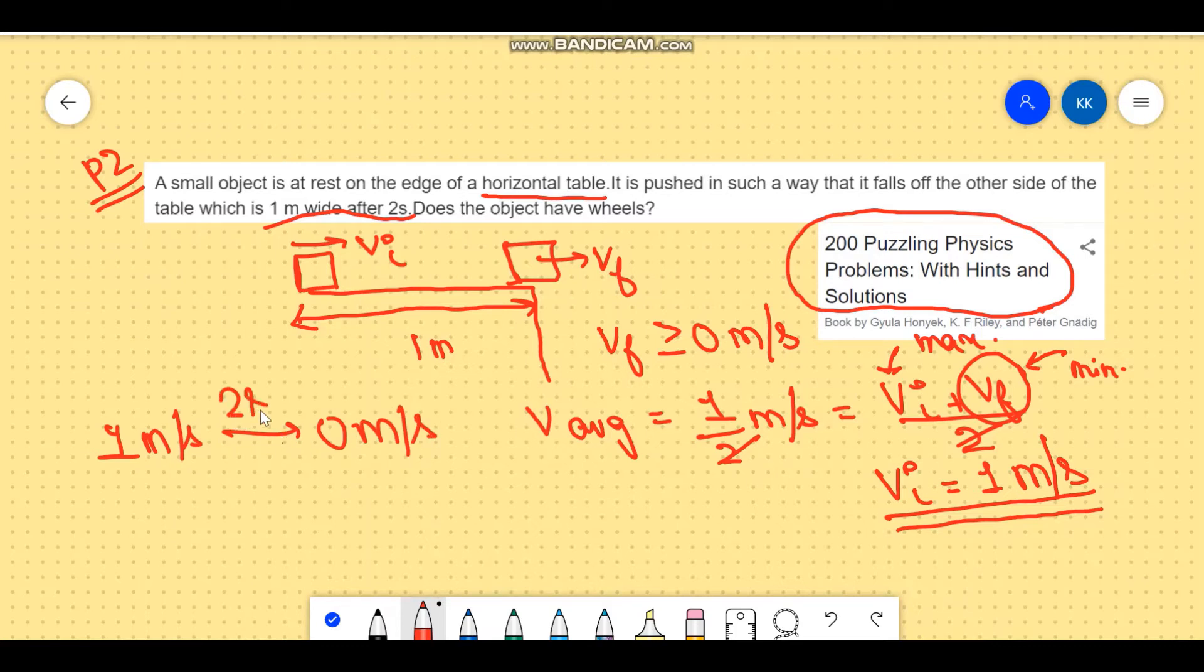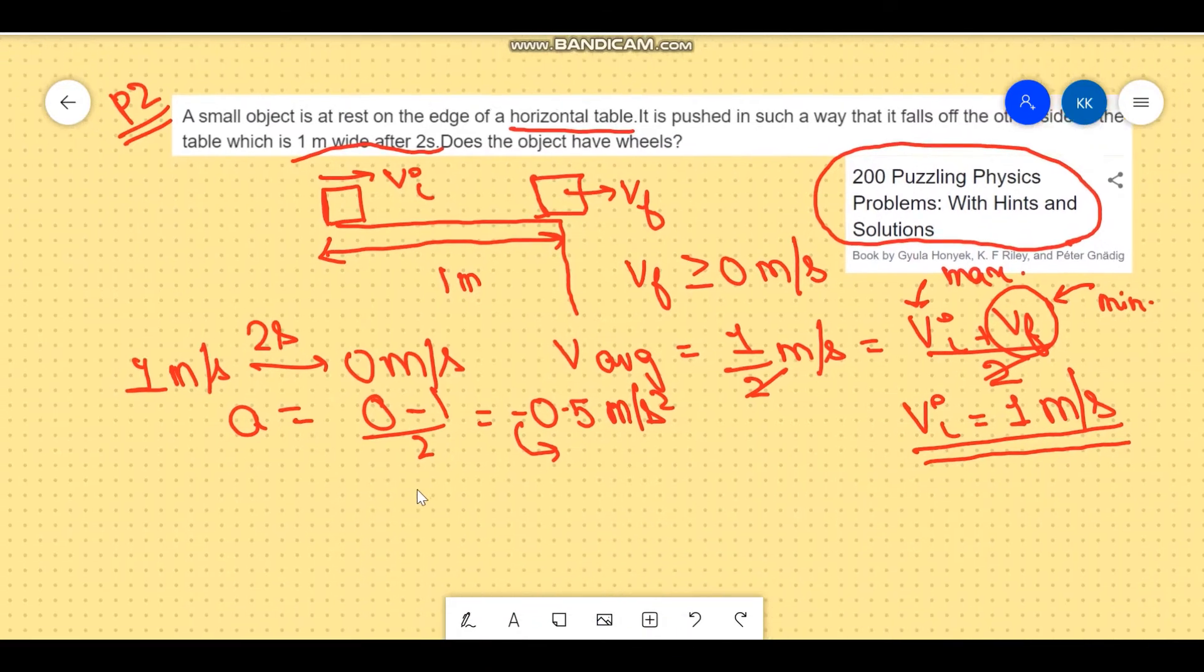So we can also calculate the acceleration which would be zero minus one over two, which is minus 0.5 meters per second squared. The negative sign implies it's retarding and it means that the direction of the acceleration is opposite to the direction of the motion of the body.